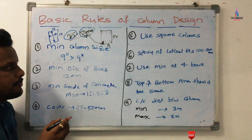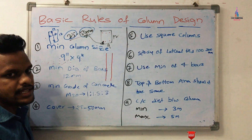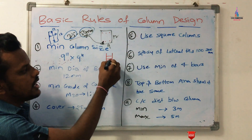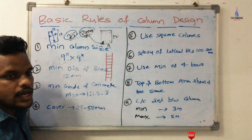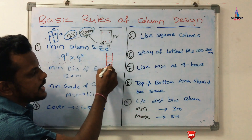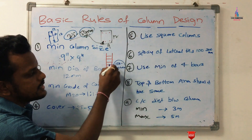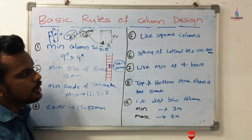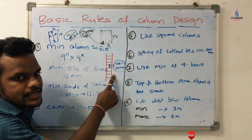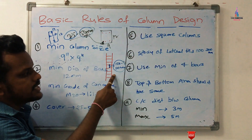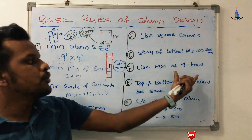The sixth rule: spacing of the lateral ties should be 100 to 200 mm. For example, in a column section with reinforcement bars, we place lateral ties between those bars. The center-to-center distance between each lateral tie should be between 100 to 200 mm. This is the basic consideration for column design — lateral tie spacing should be in the range of 100 to 200 mm.